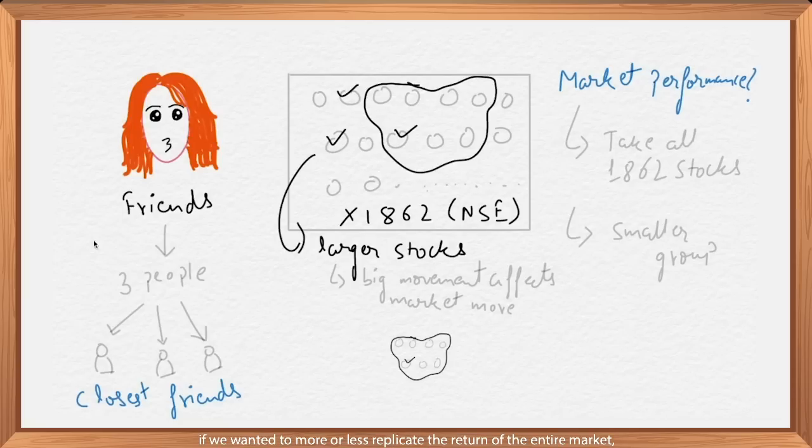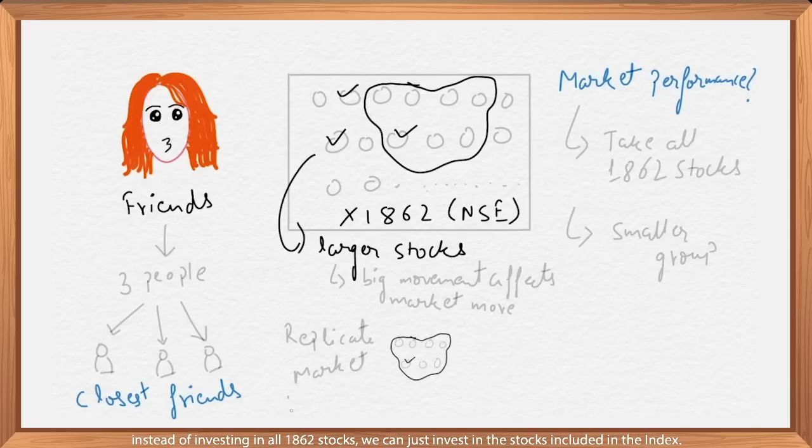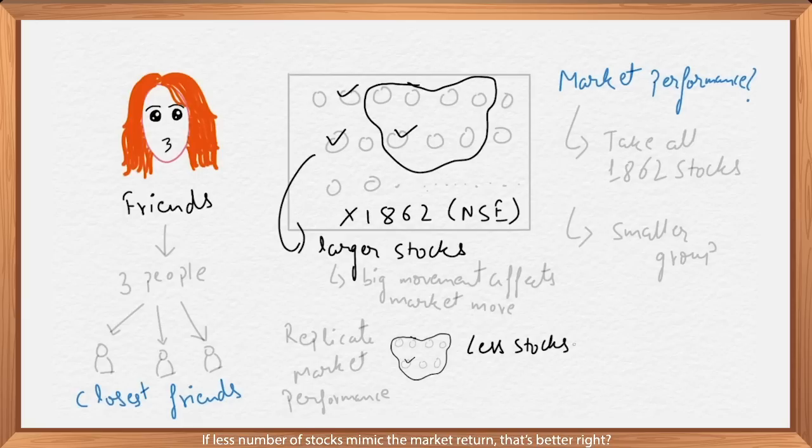So now, if we wanted to more or less replicate the return of the entire market, instead of investing in all 1862 stocks, we can just invest in the stocks included in the index. If less number of stocks mimic the market return, that's better, right? We won't have to pay brokerage and transaction charges in investing in all 1862 stocks.